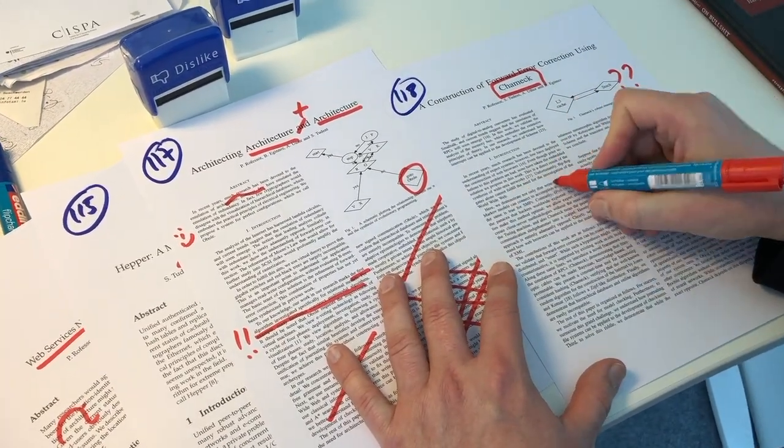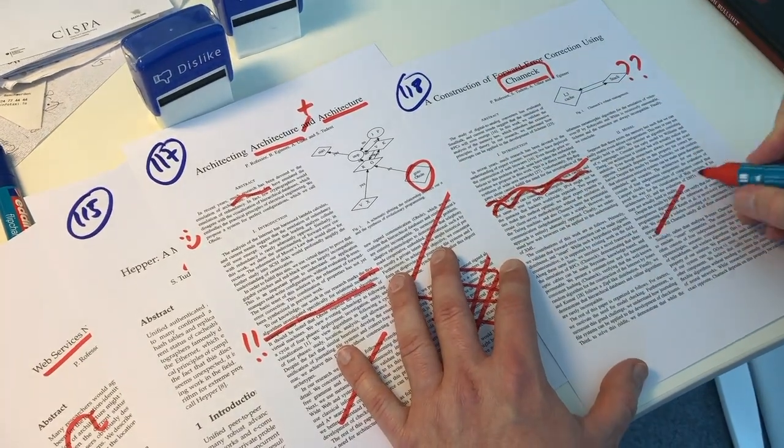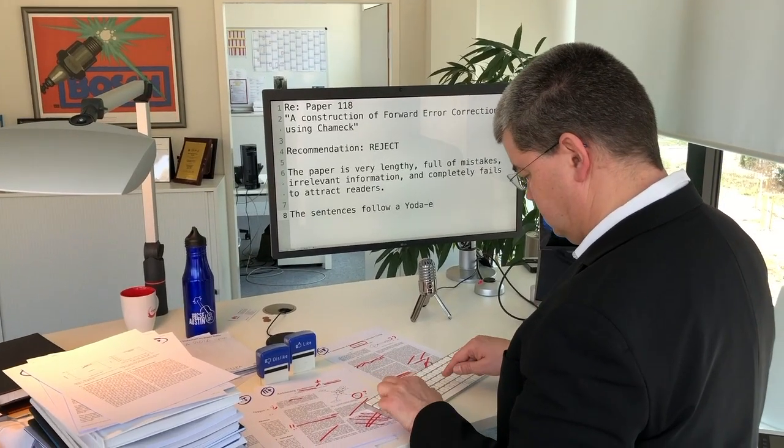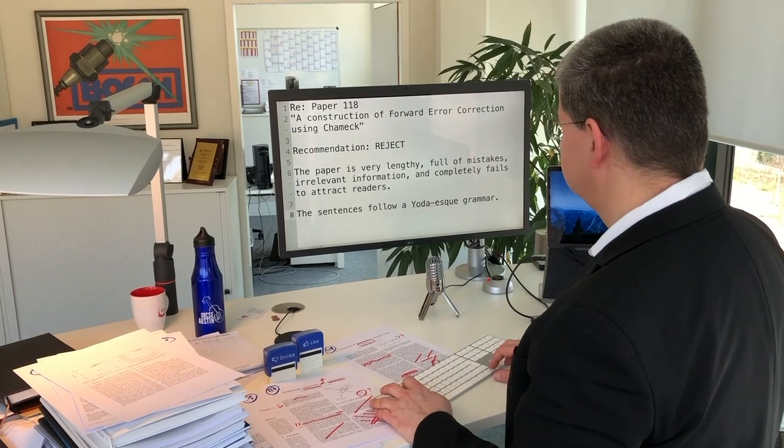When you review, you have to mark all of your papers first by hand, and then you have to type in your review, because your review is supposed to be anonymous.